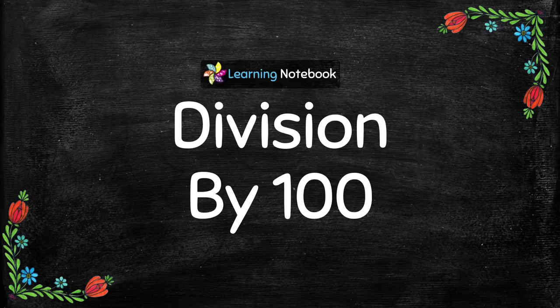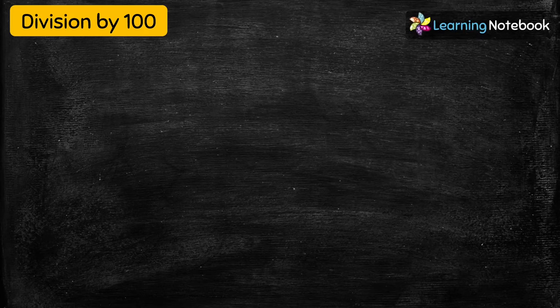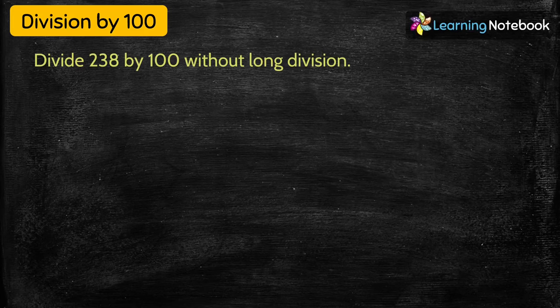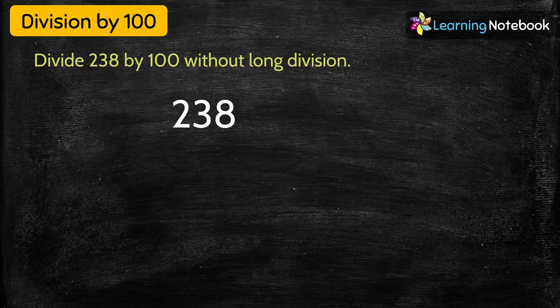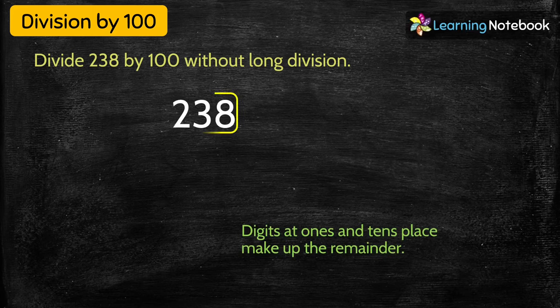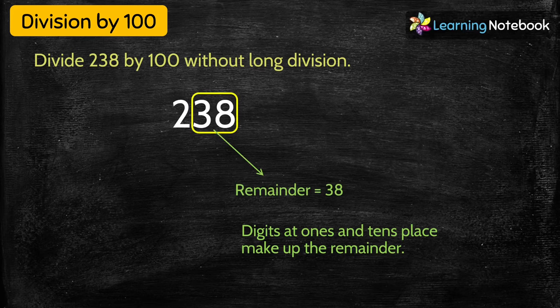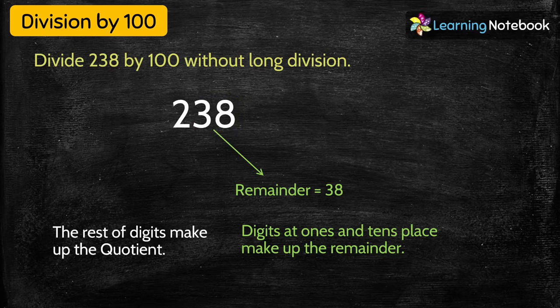Now, division by 100 without long division. Since 100 has two zeros, we take two digits — ones and tens place — as the remainder. Divide 238 by 100: digits at ones and tens place are 38, so remainder = 38. The rest of the digits — 2 — make up the quotient. Quotient = 2, remainder = 38.